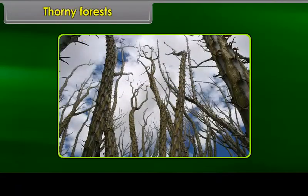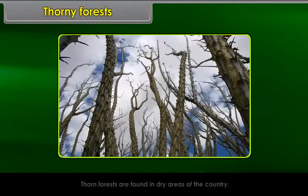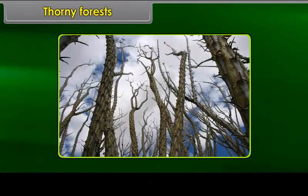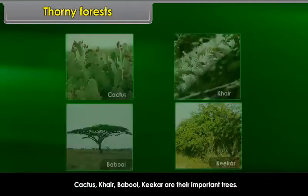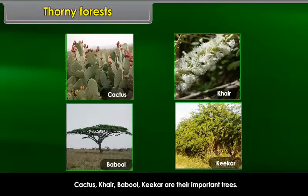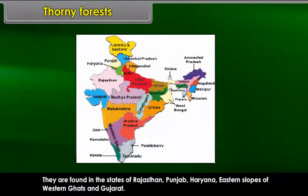Thorn forests are found in dry areas of the country. Their leaves are in the form of spines to reduce loss of water. Cactus, kher, babool, and kekar are their important trees. They are found in the states of Rajasthan, Punjab, Haryana, eastern slopes of the Western Ghats and Gujarat.